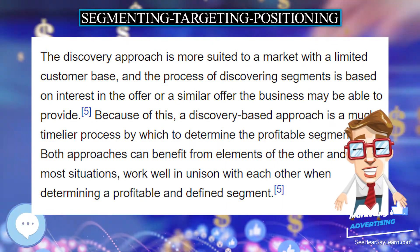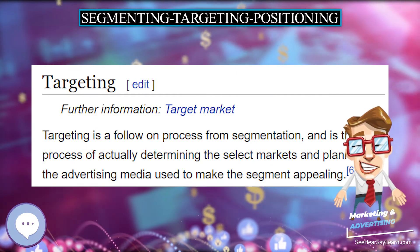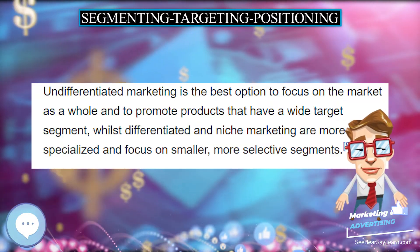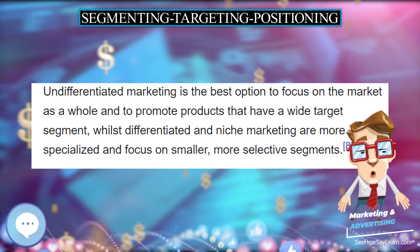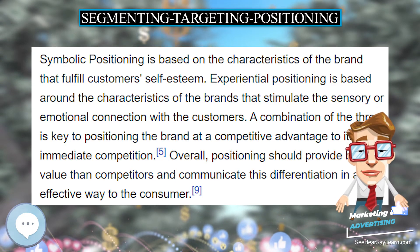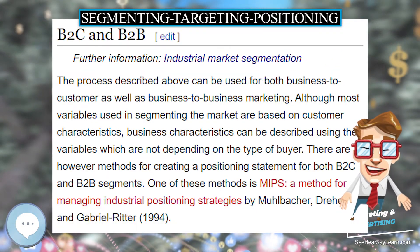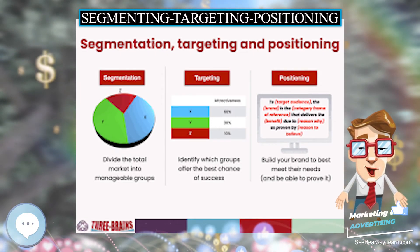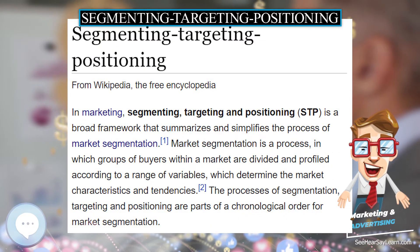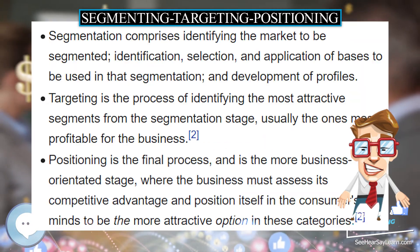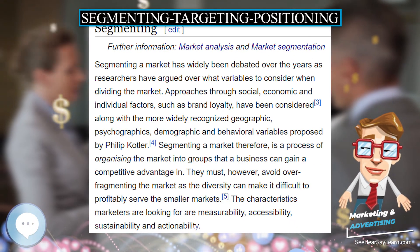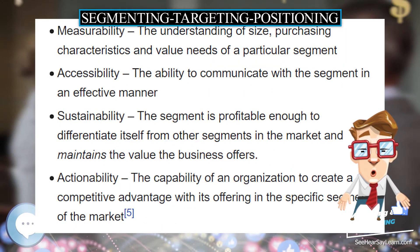Positioning is the final stage in the STP process and focuses on how the customer ultimately views your product or service in comparison to your competitors, and is important in gaining a competitive advantage. Customer perceptions have a huge impact on the brand's positioning in the market. There are three key types of positioning: functional positioning, which focuses on the product or service fulfilling consumers' needs; symbolic positioning, based on characteristics of the brand that fulfill customers' self-esteem; and experiential positioning, based around characteristics that stimulate a sensory or emotional connection with customers. A combination of all three is key to competitive advantage, and positioning should communicate differentiation effectively to the consumer.